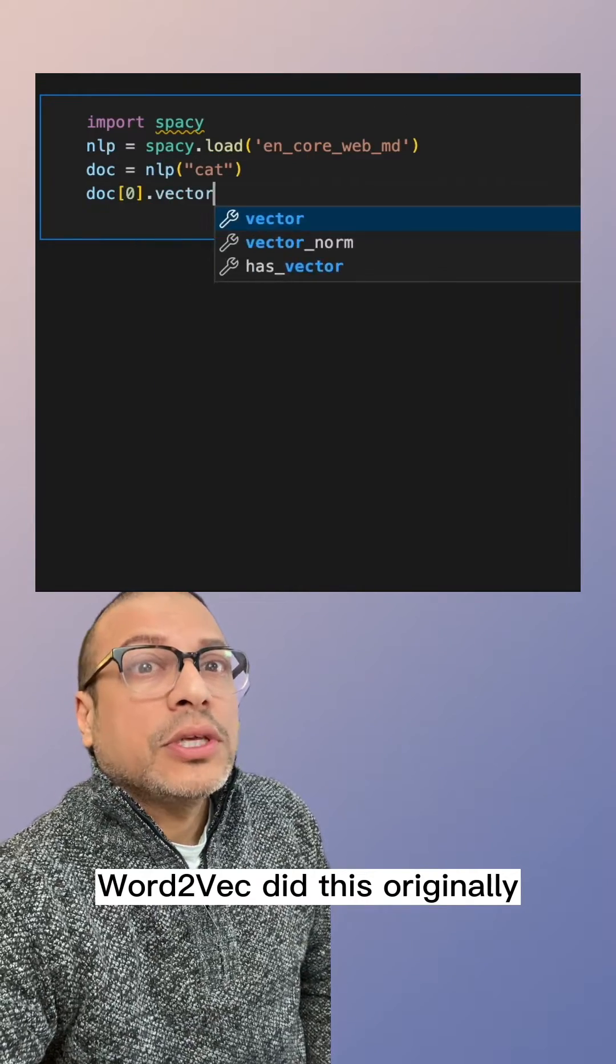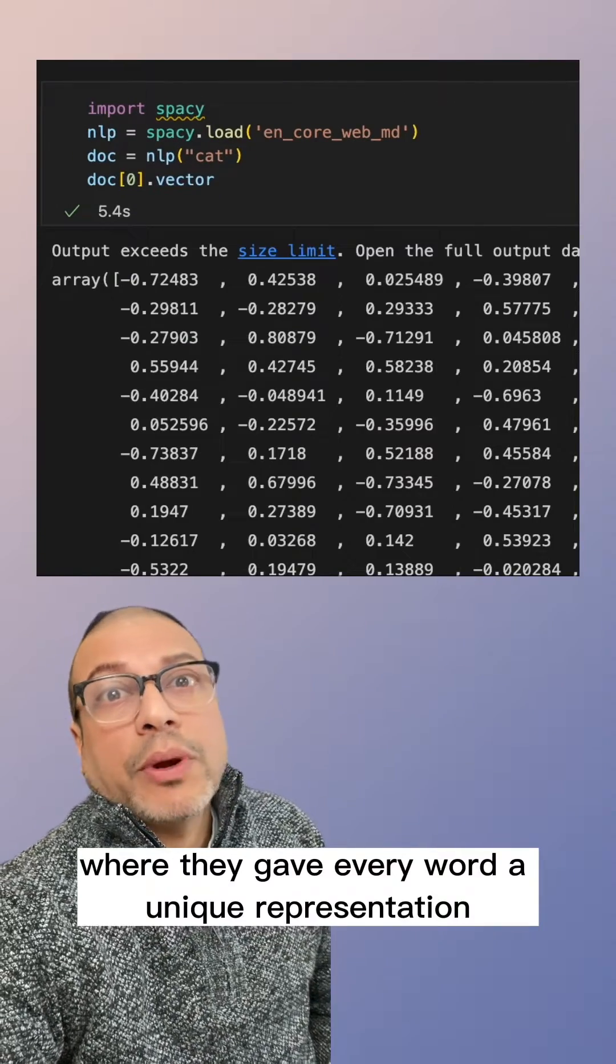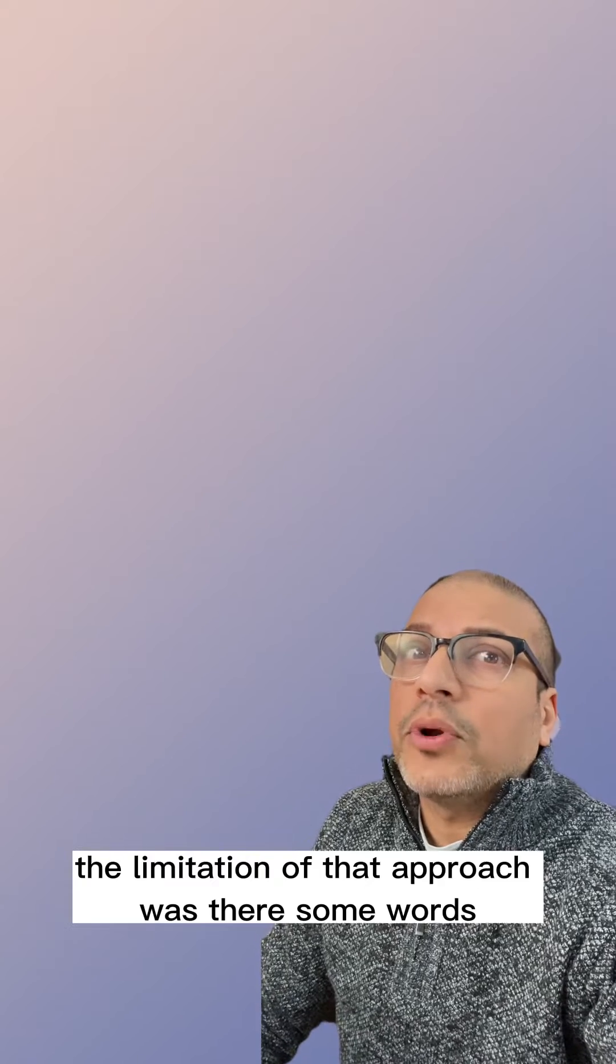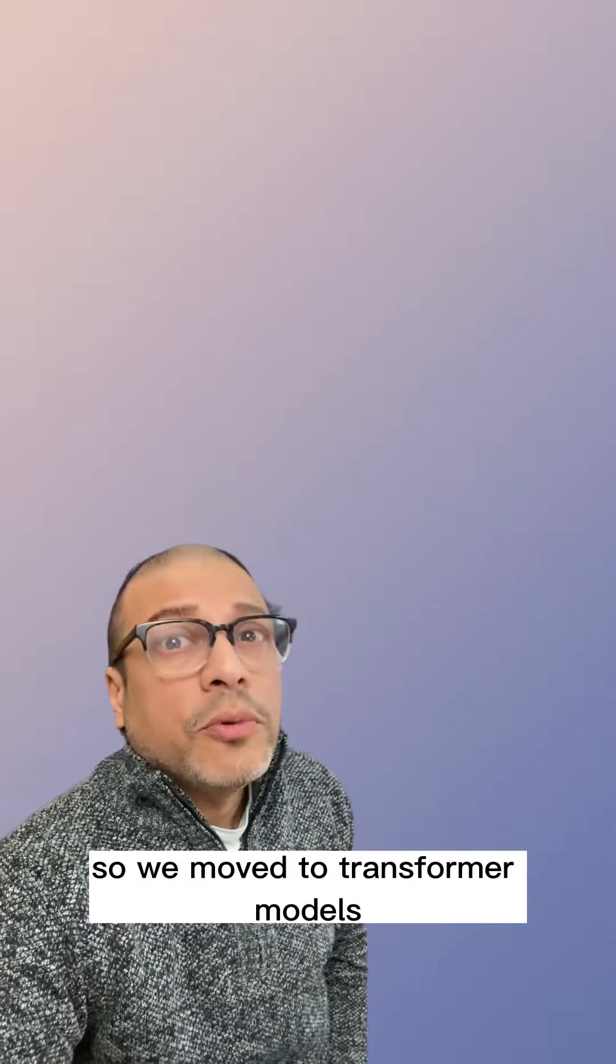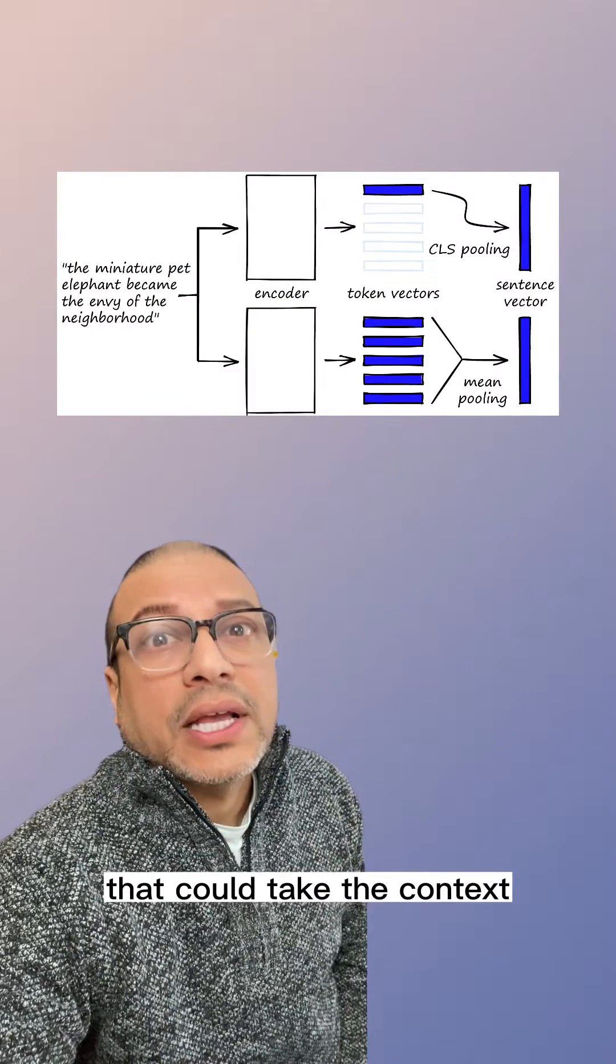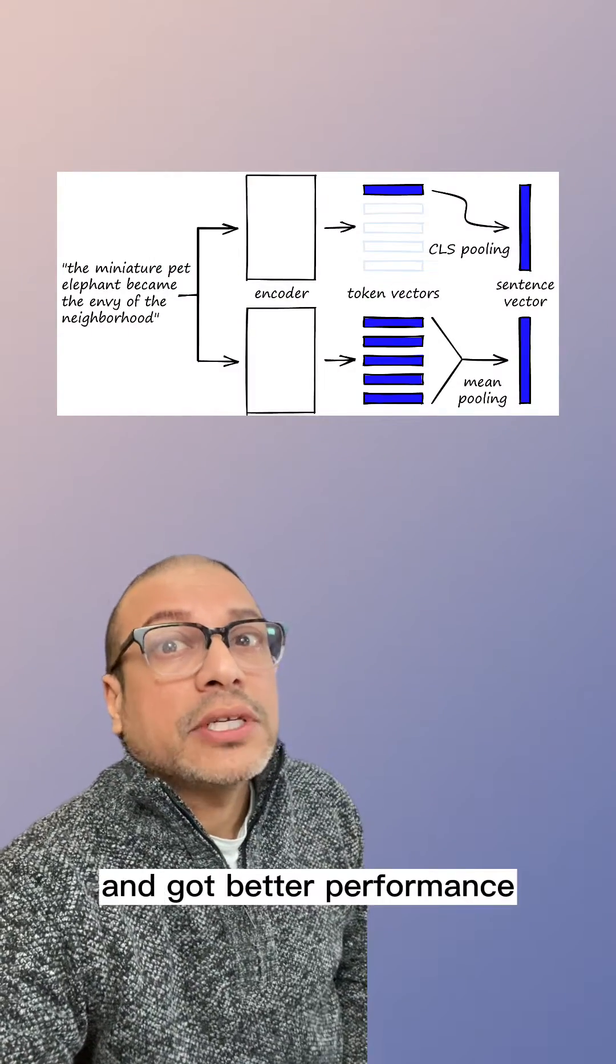Word2Vec did this originally, giving every word a unique representation. The limitation of that approach was there's some words like 'bond' or 'bat' that have multiple meanings. So we moved to transformer models that could take the context of the sentence into account and got better performance.